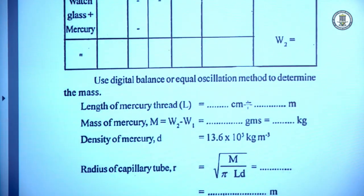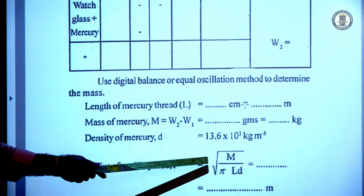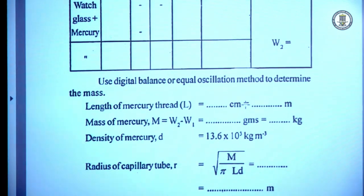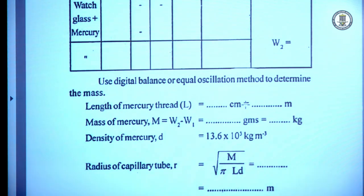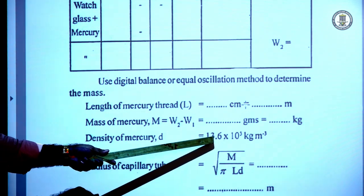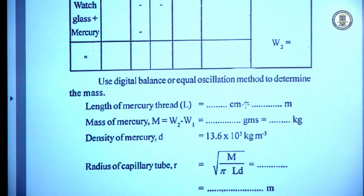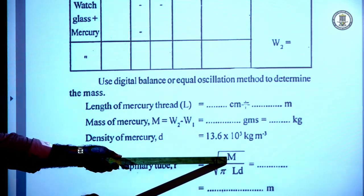In the mercury pellet method, we use the formula r = √(m / π·l·d). A pellet of mercury is inserted into the capillary tube; the mercury has the same radius as the capillary tube. The volume of mercury is π·r²·l, and its density is 13.6 × 10³ kg/m³. So π·r²·l·d gives the mass of the mercury pellet.